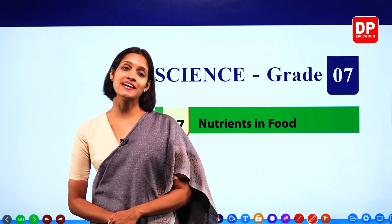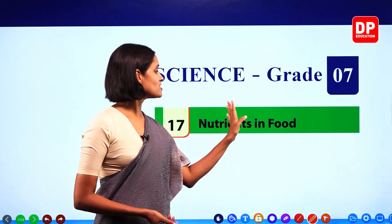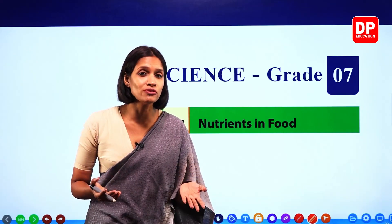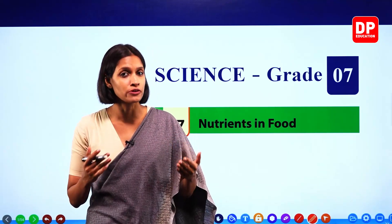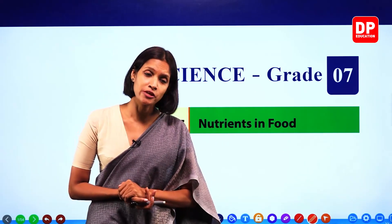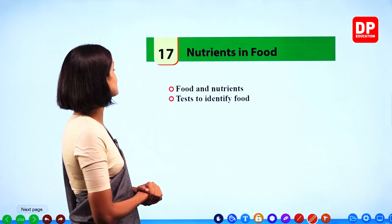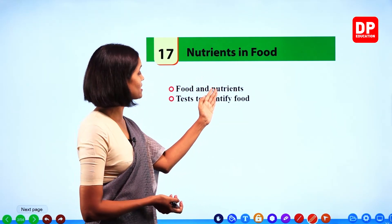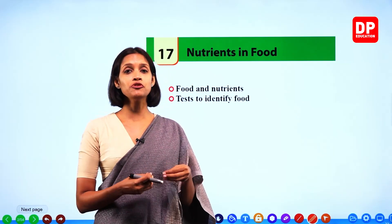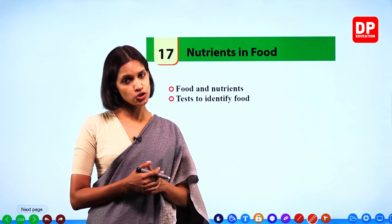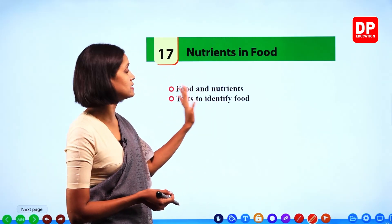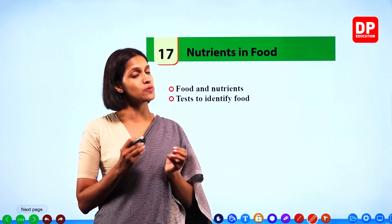Hello dear grade 7 children. Today we are going to learn the 17th lesson of the science textbook: nutrients in food. This topic is not new to you because you have learned it many times in lower grades under the Ara subject and in your health subject as well. We are going to learn about food and nutrients, the different types of nutrients present in food, food items containing them, their functions, and also how to identify different nutrients in food experimentally.